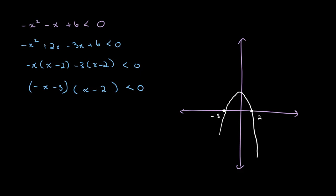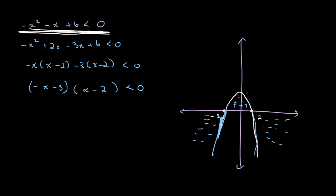Looking back at our original equation, our entire expression is less than 0, so we want to find all the values for which our expression is negative. From beyond x equals 2 onwards, all values of y are negative. From beyond x equals negative 3 to the left, all values of y are also negative. The small portion between them is positive. So for this inequality to be true, x is less than negative 3 or x is greater than 2.